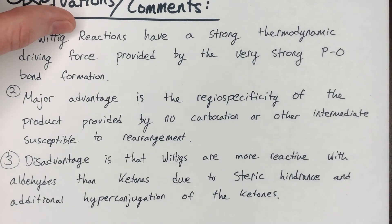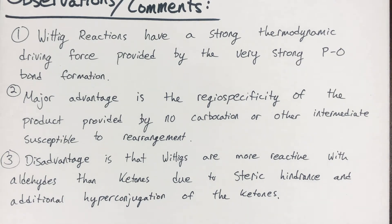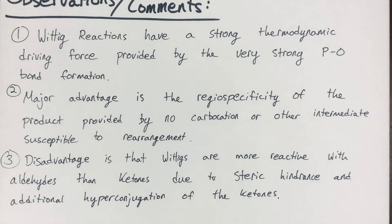One main disadvantage is that Wittig reactions are more reactive with aldehydes than ketones, for two reasons. First, there's steric hindrance from the R groups of the ketone. Second, as an electronic effect, there's additional hyperconjugation from the ketone R groups, which stabilizes the carbonyl carbon and makes it less electrophilic. Since the carbon nucleophile of the ylid must attack the electrophilic carbonyl carbon, this extended hyperconjugation in ketones makes them less reactive toward the Wittig reaction than aldehydes.